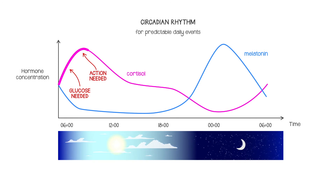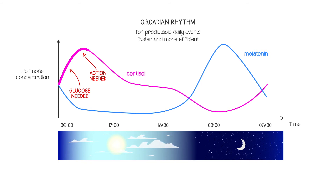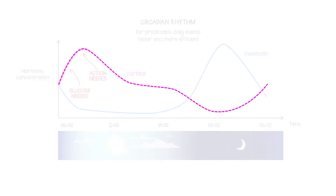For predictable daily events, having a circadian rhythm is faster and more efficient as a way of organising the body than simply waiting for the event to occur and responding to it when it does.